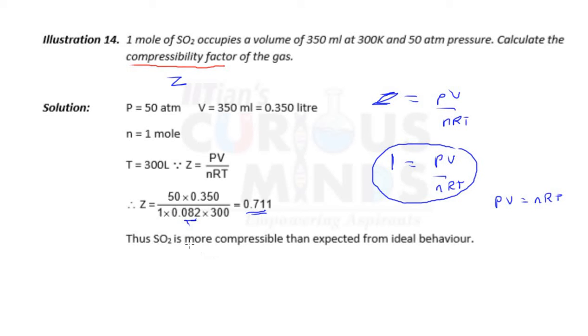You can see Z is less than 1. So SO2 is more compressible than expected from ideal behavior. For ideal behavior Z equals 1. If this value would have been more than 1, suppose the answer is 1.711, then this would have been less compressible. I hope you guys understood this video. Thank you for watching.